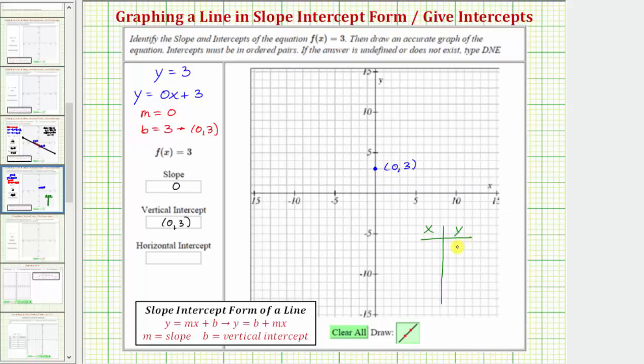But notice how for the table of values, because f of x or y is always three, the y column must always be three, and the equation y equals three does not contain x, which means x can be any value that we wish. Let's go ahead and just select one, two, three.